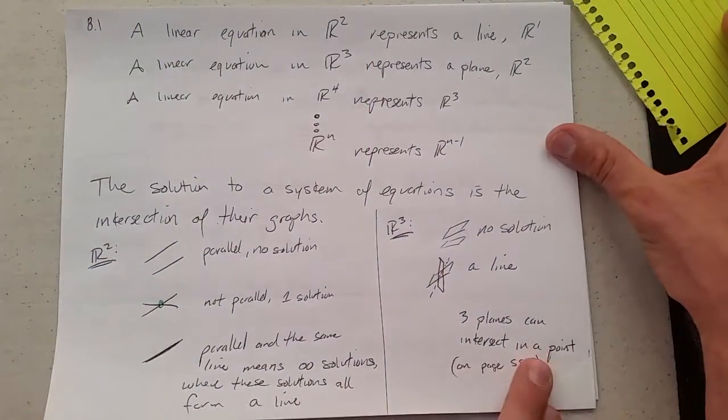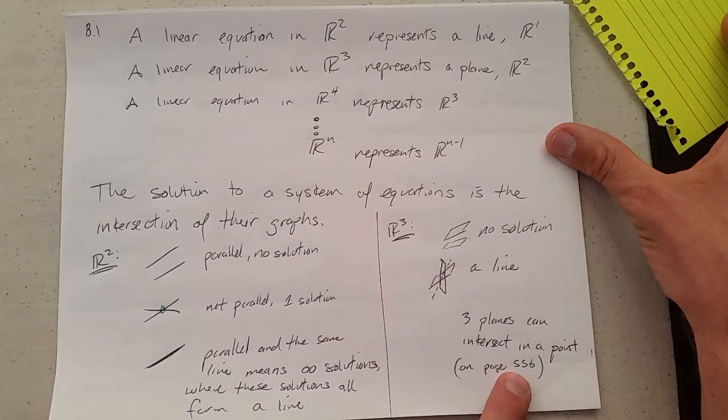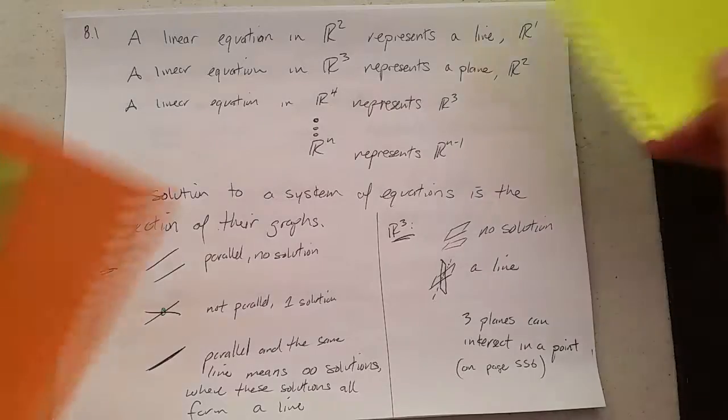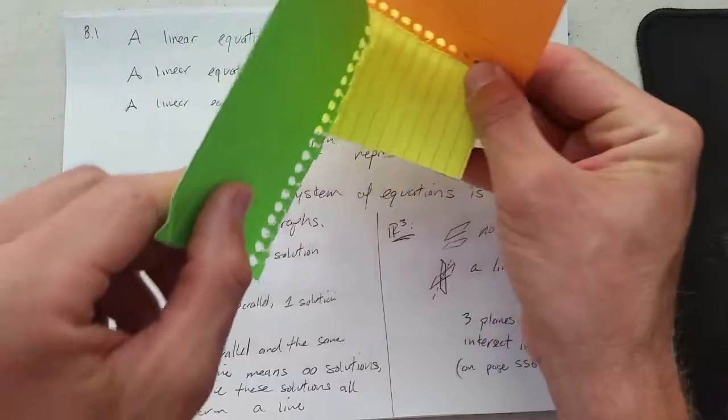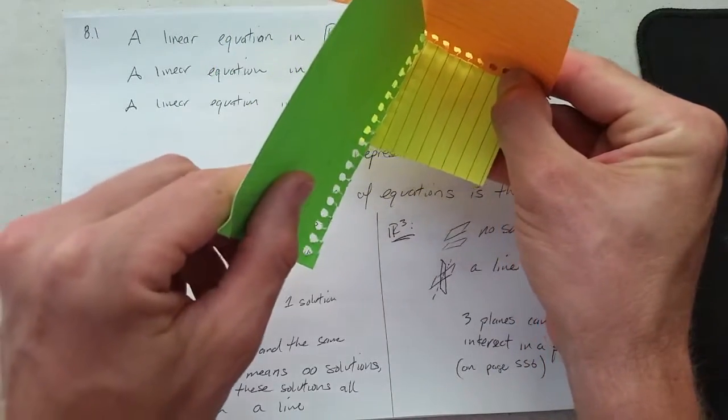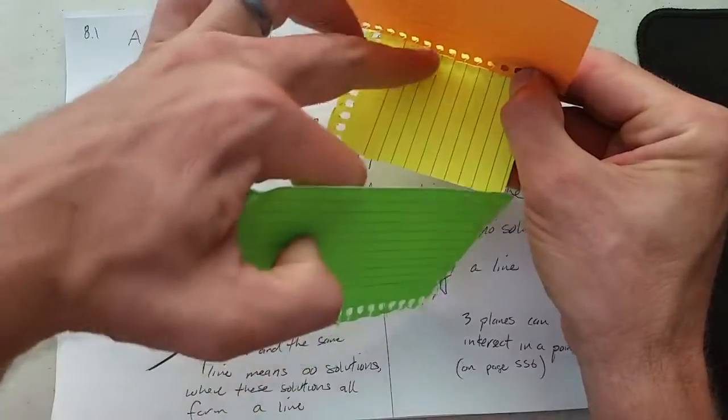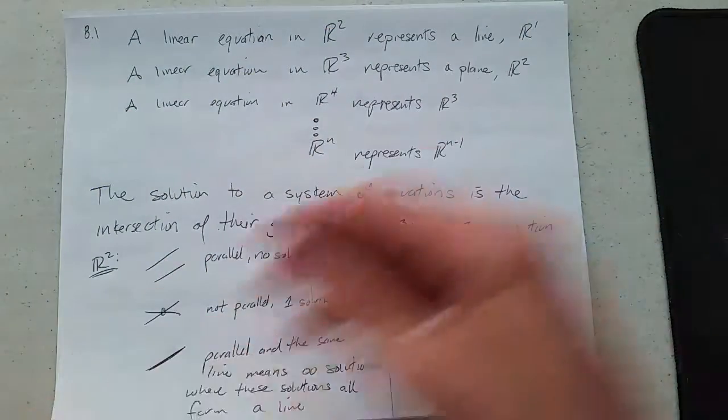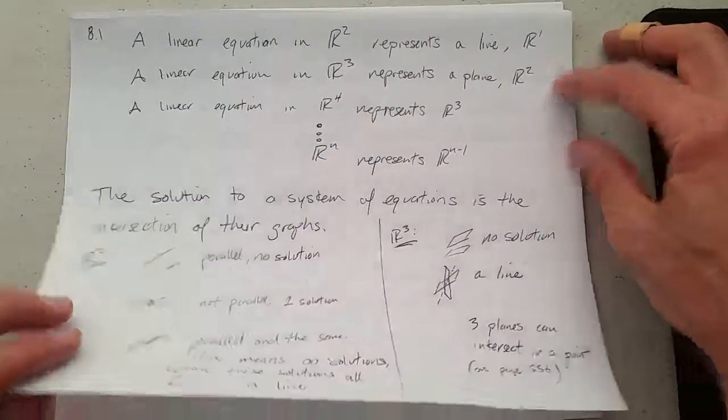It's very hard to visualize in two dimensions. If you look on page 556 in the book, they have a computer-generated graph of three planes that intersect at a single point. Probably the easiest way to think about it is if all three planes are perpendicular to each other, they would intersect right at that point. So these are the possibilities in two- and three-dimensional space.